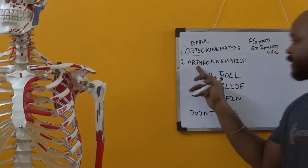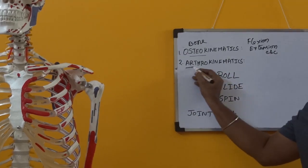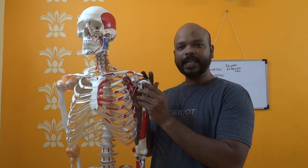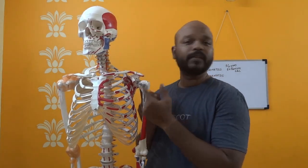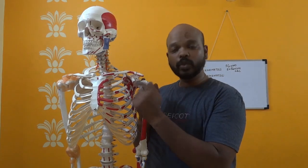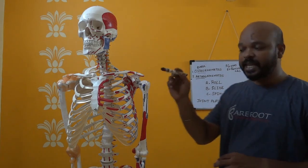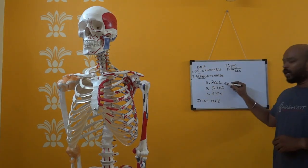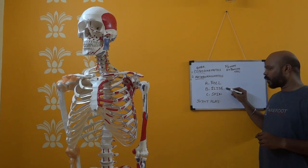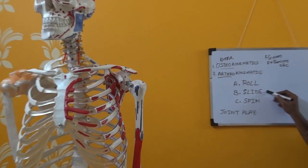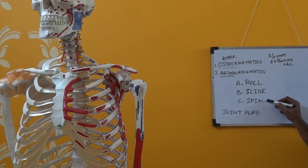The next important thing is arthrokinematics. The term 'arthro' refers to joint — for example, arthroscopy is any keyhole surgery into the joint. Arthrokinematics is the movement that takes place between the two surfaces of a joint. For example, while osteokinematics gives us flexion and extension, arthrokinematics describes either a roll, a slide, or a spin.